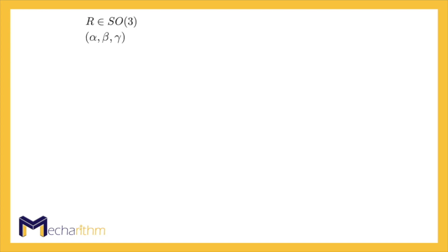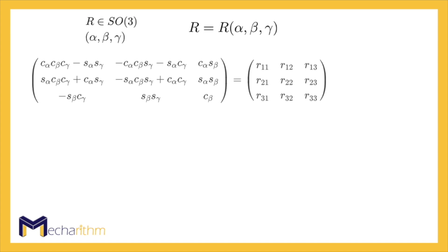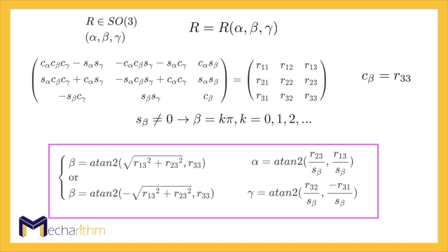The inverse solution is similar to before. For every rotation R in SO(3), there exists a triple alpha, beta, and gamma that satisfies R equal to the rotation matrix from the Euler angles. To solve this, we equate the expression for the rotation matrix from the Euler angles to the given rotation matrix. From this equation, we can see that cosine of beta is equal to the entry of the third row and third column. If sine beta is not equal to zero — and thus beta is not equal to an integer multiple of π — then similar to before, the following solutions can be found for alpha, beta, and gamma.